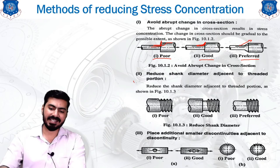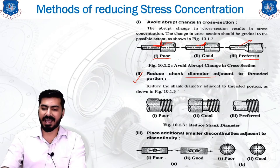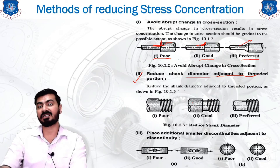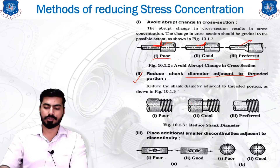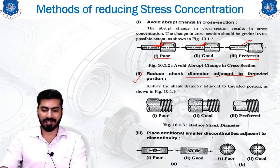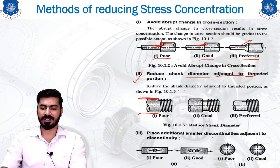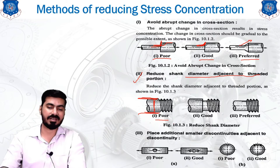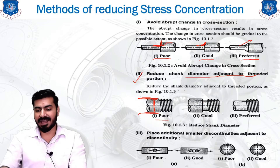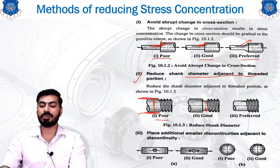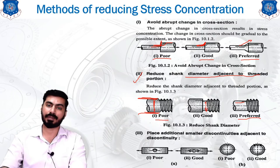The second method is to reduce the shank diameter adjacent to the threaded portion. The shank is the body of the component adjacent to the thread. If the diameter is not reduced, the stress concentration is higher — a poor condition. If the diameter is reduced somewhat, conditions improve. Reducing the diameter thoroughly, as shown in the third figure, is the most preferred condition, minimizing stress concentration at the threaded region.